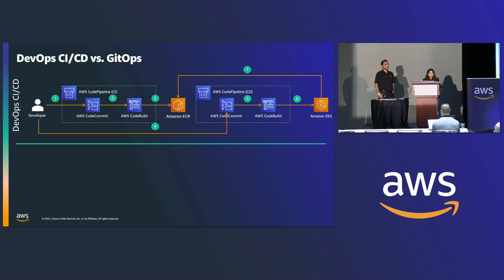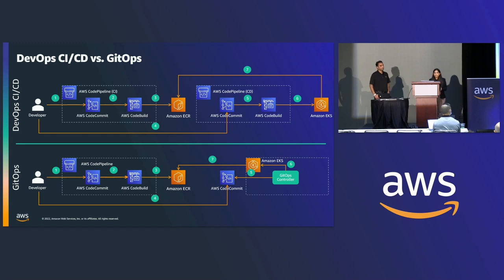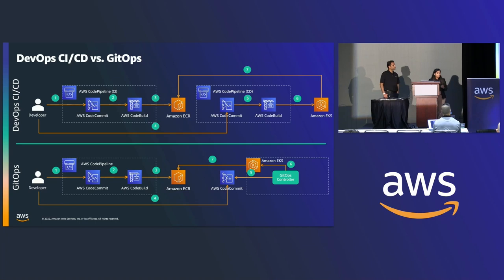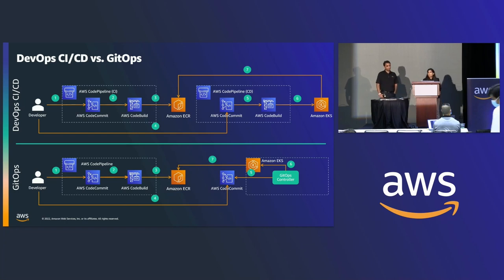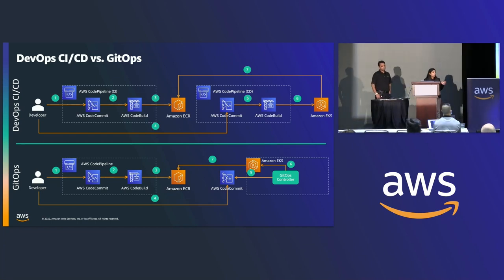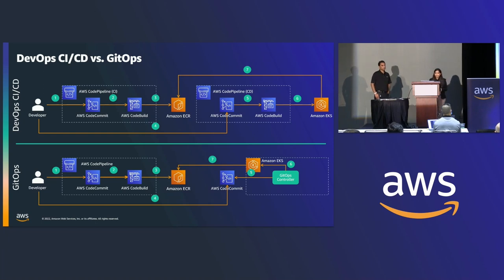In traditional DevOps, either the application developer or an automated process takes manifest changes and pushes them onto the Kubernetes cluster using native APIs such as kubectl apply or kubectl exec. In GitOps, the CI pipeline doesn't change — the developer still makes changes to the code, commits to Git, and the CI pipeline builds images and publishes them to the ECR repository. What changes is the CD pipeline: instead of a push model, there is a controller or agent running within your Kubernetes cluster that looks for changes committed to the manifest repo and applies them to the cluster.